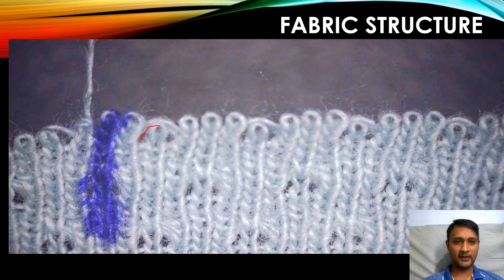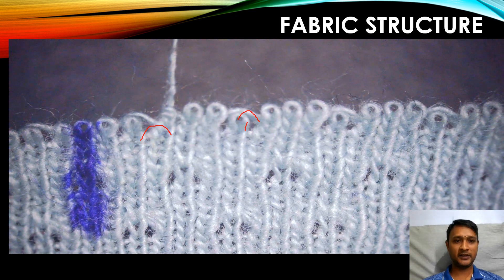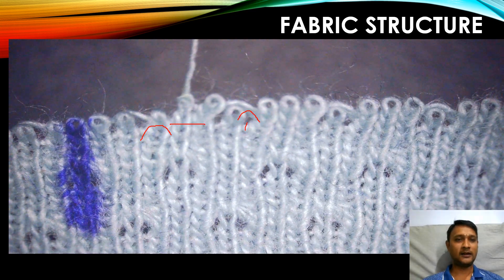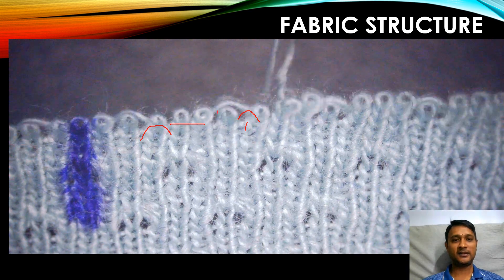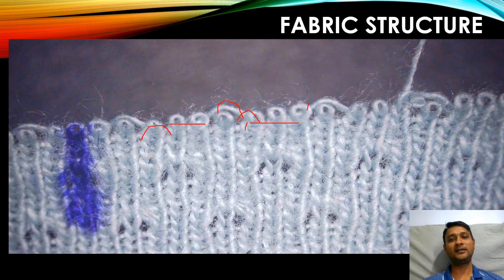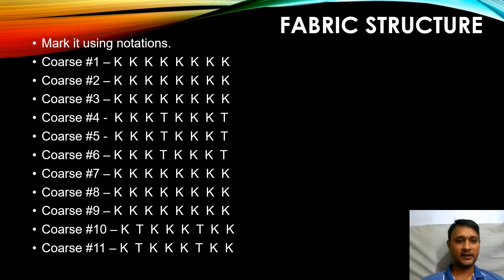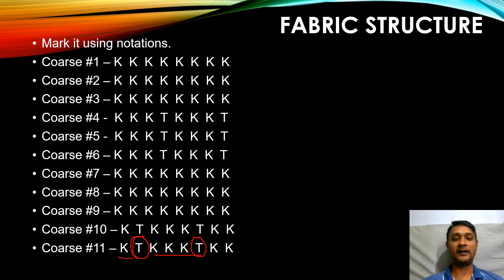In course number eleven we again have second needle tuck and sixth needle tuck. The complete loop is getting unraveled from needle one, then three four five, and again seventh eight nine — with tuck at needle six and ten. So course numbers ten and eleven are the same. With our usual notation technique: the first needle is knit, second needle is tuck, followed by three knits, again tuck, and then two knits. Let's unravel course number twelve.